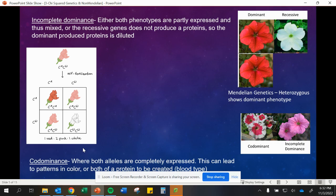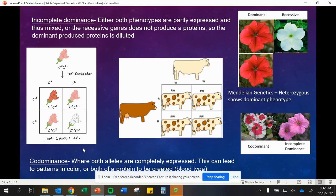Codominance, on the other hand, is where both are expressed completely. This can be where we have a pattern or where we have both phenotypes being expressed, like in blood type. We'll talk about examples of that as well. Here we have both brown and white happening for a heterozygous individual.